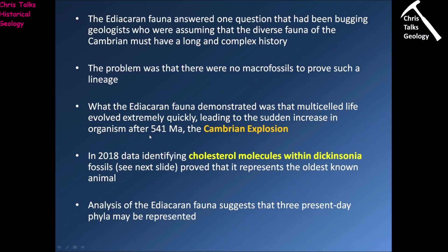In the last few tens of millions of years of the Proterozoic, the Ediacaran fauna makes its appearance, and their number and distribution shoot up, taking us into the Cambrian where those animals evolve further to develop hard shells. In 2018, analysis of a fossil of an organism called Dickinsonia managed to identify cholesterol molecules within the fossil — leftovers from the animal itself. Cholesterol is pretty much an animal cell product, and the particular type identified only really comes from animal cells. This proves definitively that Dickinsonia is the oldest example we have of an animal.